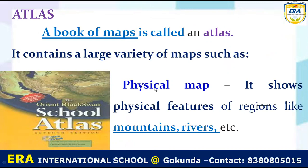First, atlas contains the physical map. What is a physical map? It shows the features of regions like mountains and rivers. The map which shows features like mountains and rivers is called a physical map.